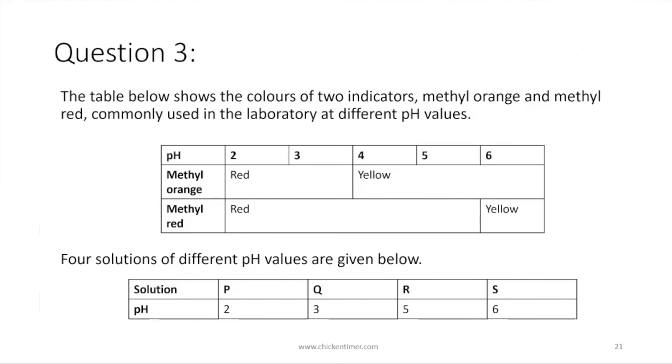I have questions down here. They say the table below shows the colors of two indicators, methyl orange and methyl red. These are some indicators from somewhere, and they are used in labs at different pH values. Then you have four solutions: P, Q, R, S.